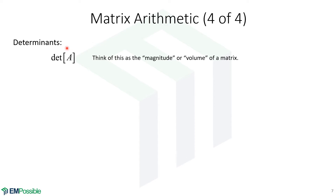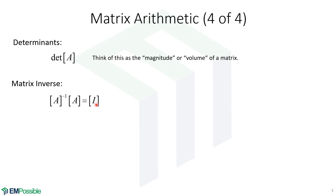Determinants. The determinant of A — the loose intuitive way to think about it is as a magnitude or volume of the matrix. It's used in many different algorithms; we've already seen how the determinant can tell us if a matrix is solvable. The matrix inverse is also computationally intensive to calculate. If we pre-divide a matrix by its inverse, we get the identity matrix — think of it as A divided by A gives us one.